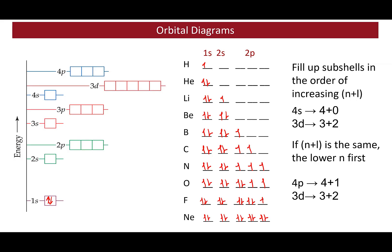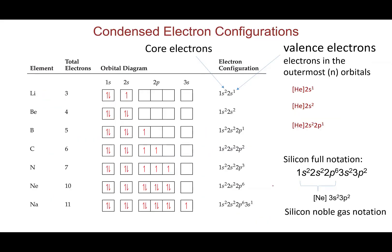Electrons in completely filled energy levels are called core electrons, while those in partially filled energy levels are called valence electrons. For lithium, the two electrons in energy level 1 are core electrons, and the electron in 2s is a valence electron. For beryllium, the two 1s electrons are core and the two 2s electrons are valence — because energy level 2 is still partially filled since the 2p orbitals are empty. This pattern continues through boron, carbon, nitrogen, and so on.